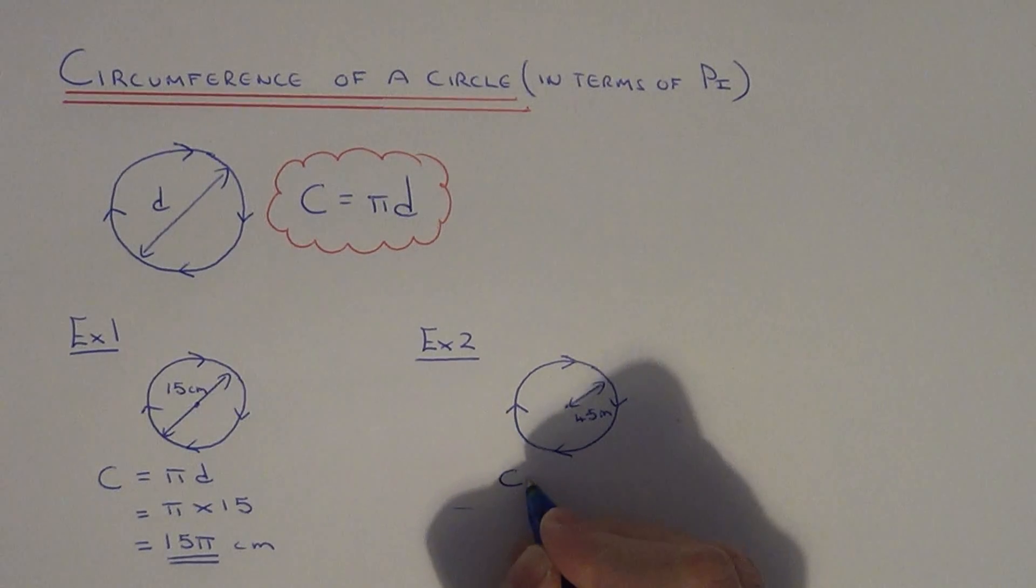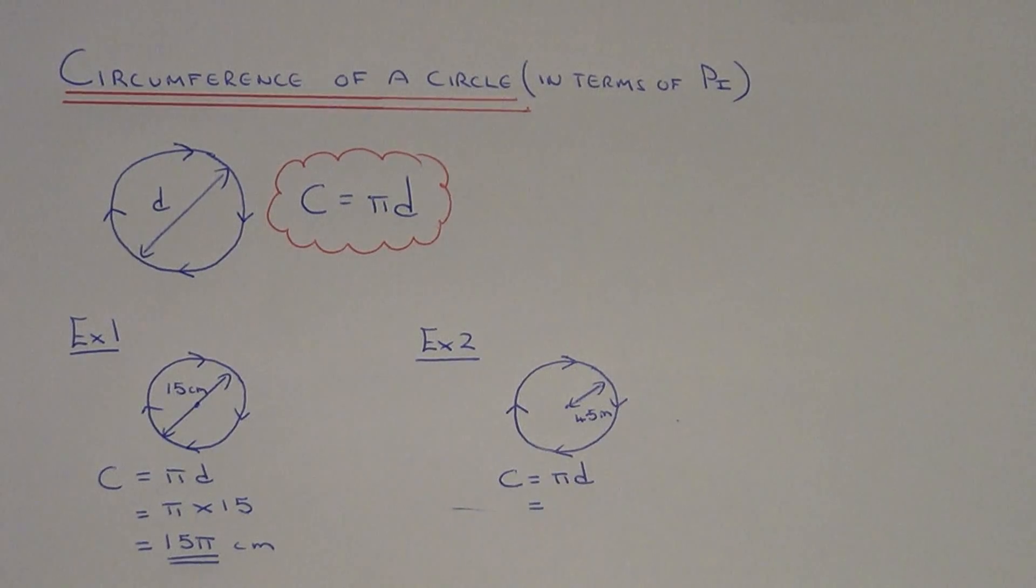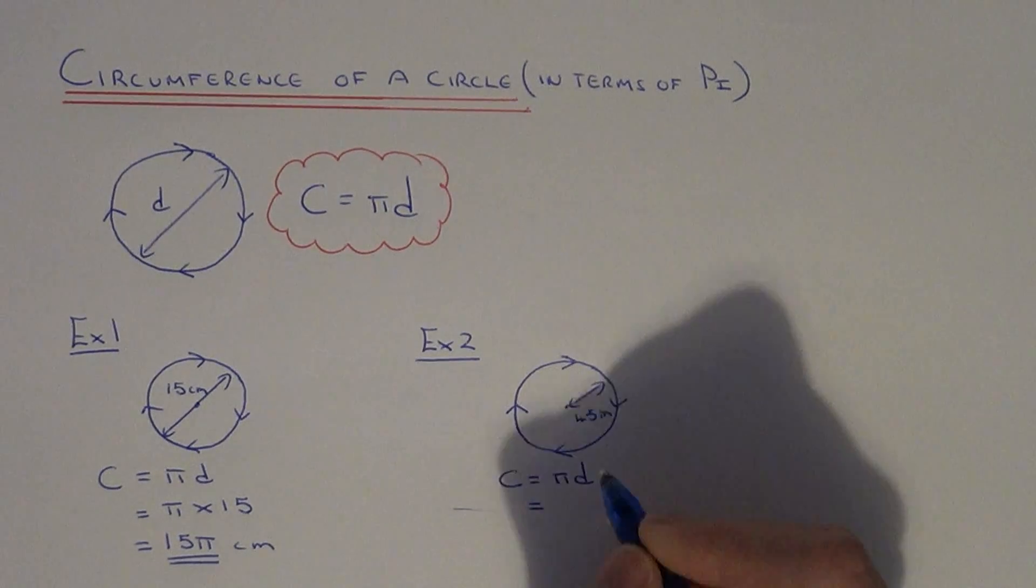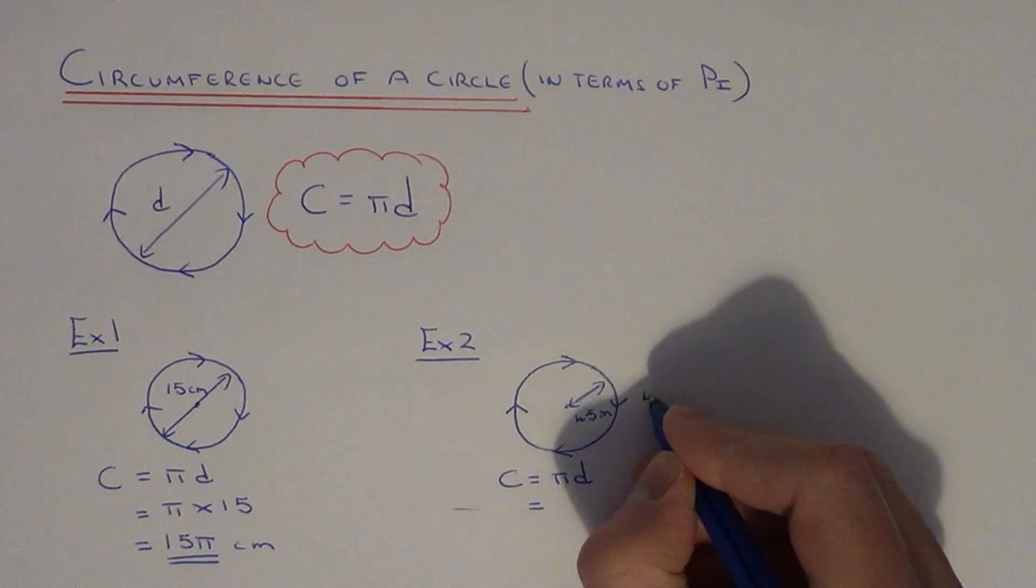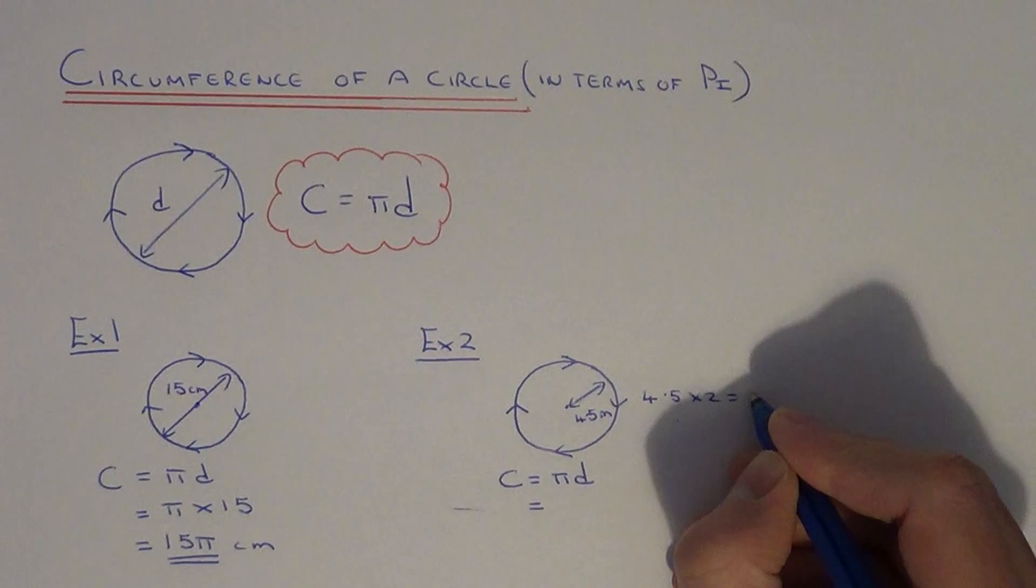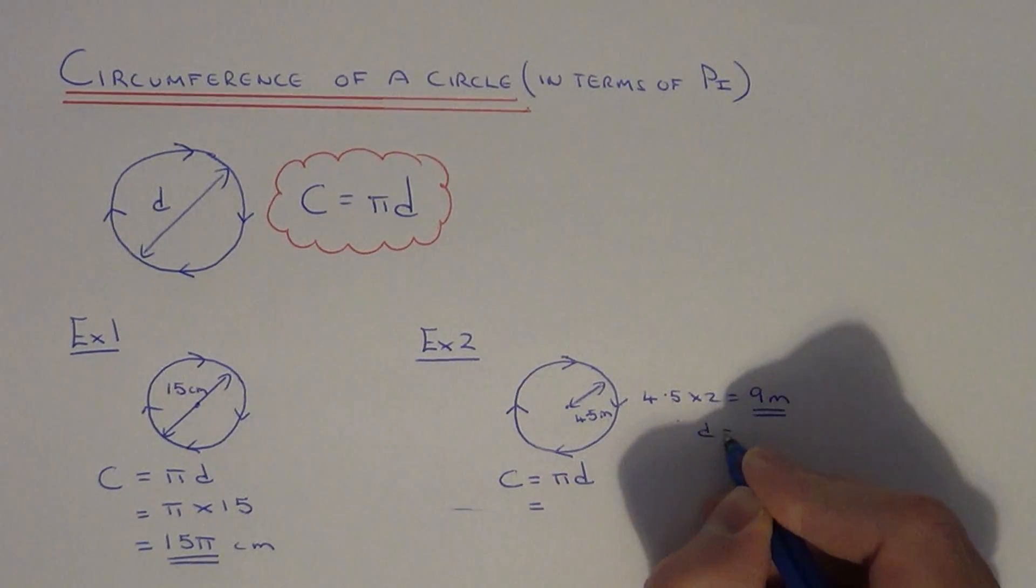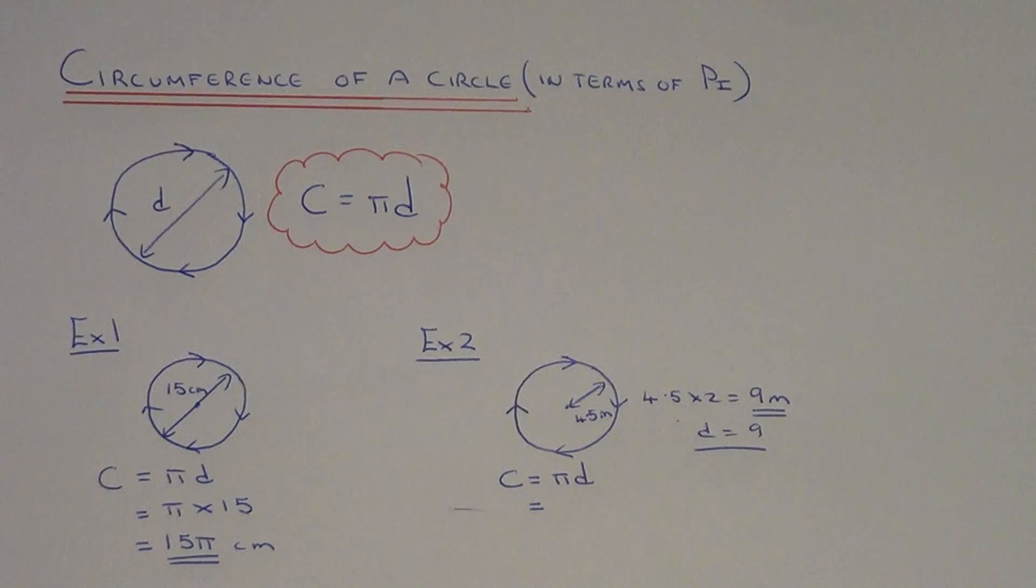Let me copy my formula down, which is c equals pi times your diameter. Remember, we need to substitute the diameter into the formula, not the radius. So we need to first double this distance here to give us the diameter, which is 9 metres. So d equals 9. That's the number we substitute into our formula.